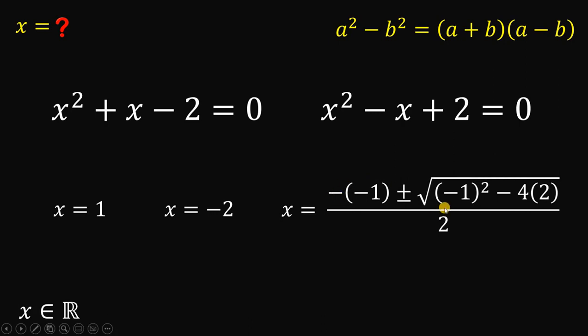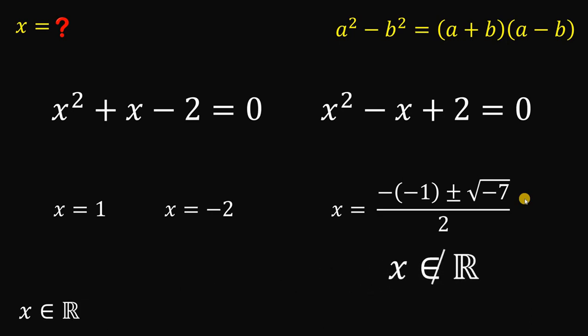Now, let's simplify the number inside the radical sign. Negative 1 squared is 1. Negative 4 times 2 is negative 8. So, 1 minus 8 must be negative 7. Oh, no. Square root of negative 7 is not a real number. So, we don't get any real number x in this case.